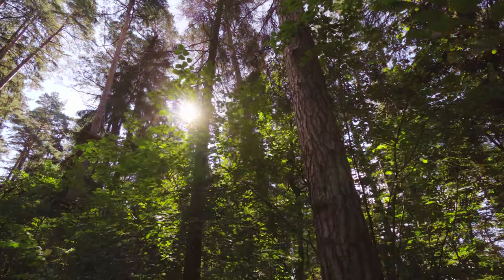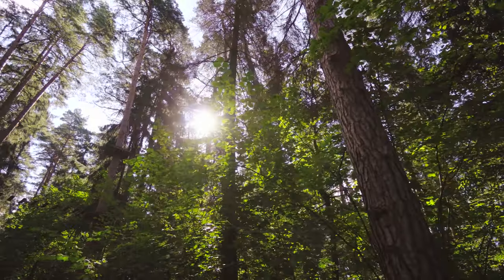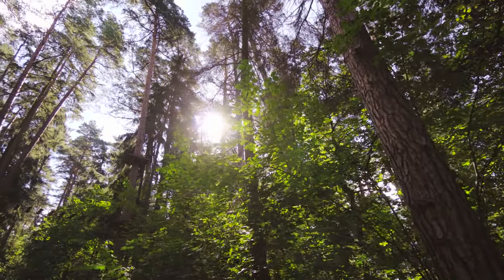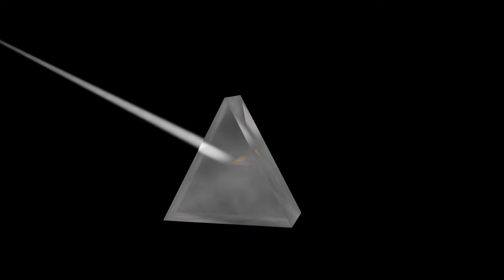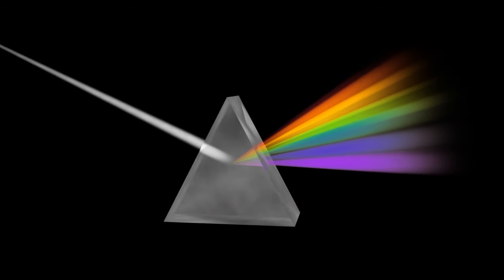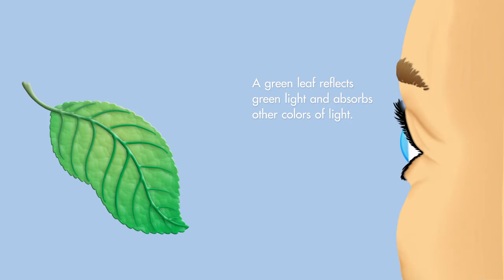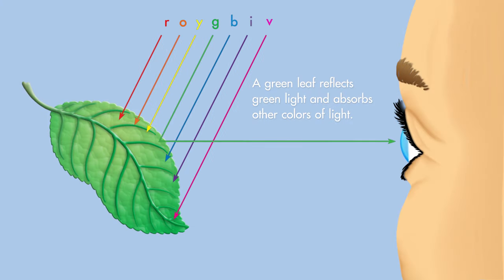Why does a plant need more pigments than just chlorophyll A? Because there is more than one color of light. White light is actually a combination of many different colors of light. Objects that appear green to our eyes reflect green light and absorb all other colors. Chlorophyll A reflects green light, but absorbs all other colors.